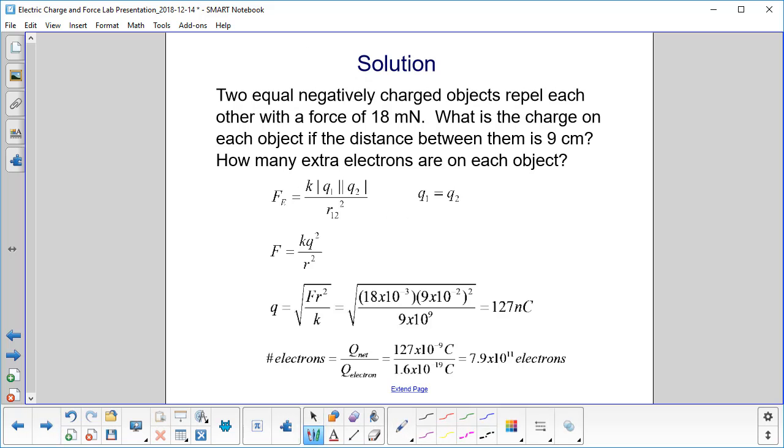We start with Coulomb's Law, and the first thing you have to note is that they have equal charges. So the magnitude of Q1 is equal to the magnitude of Q2.